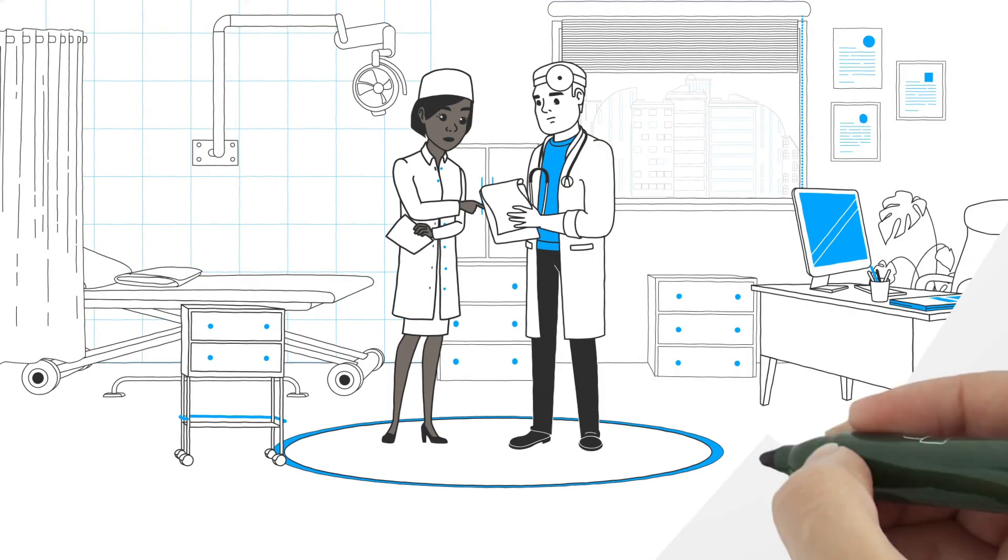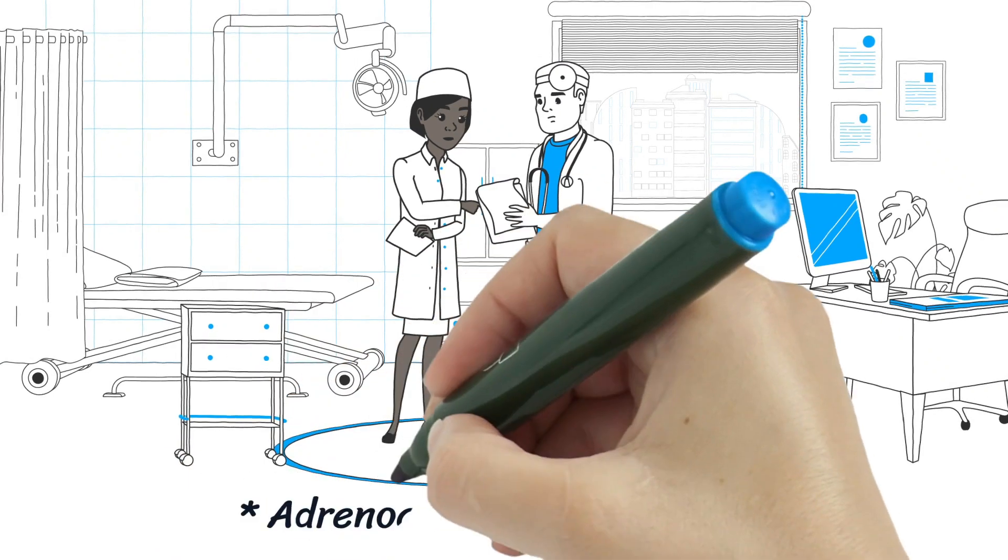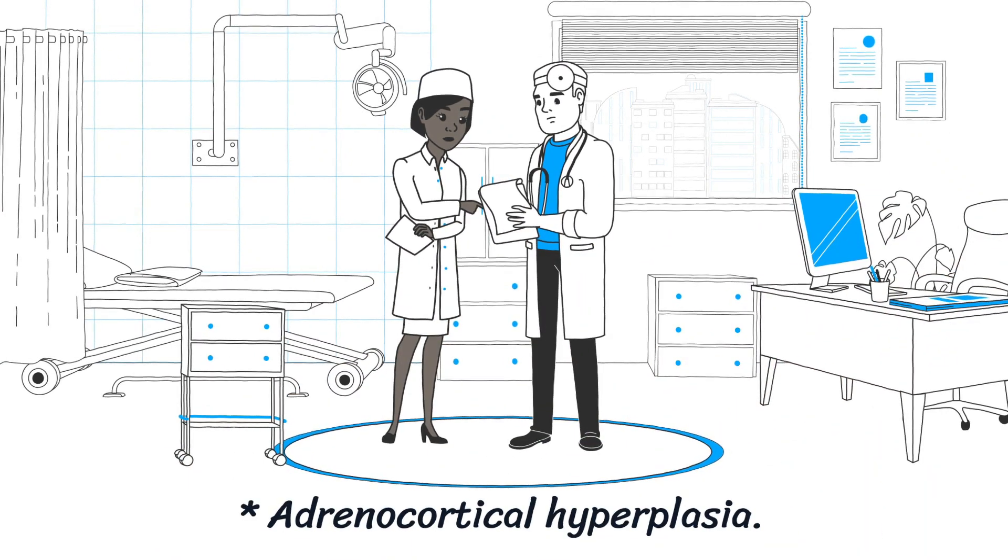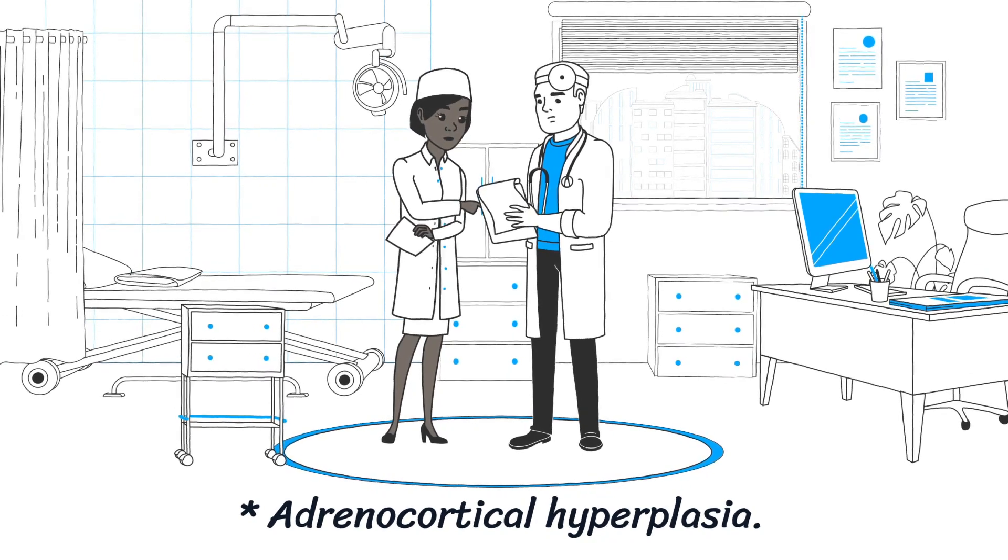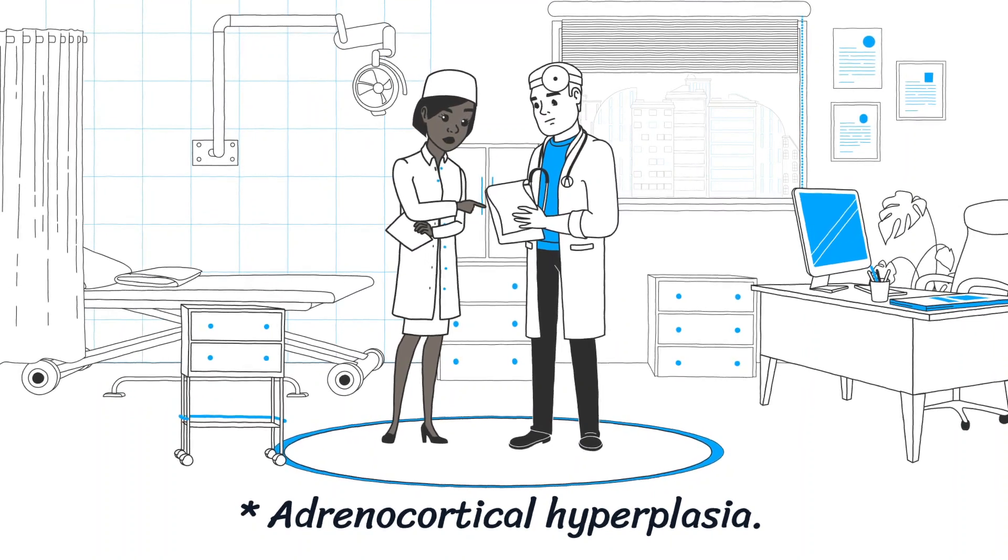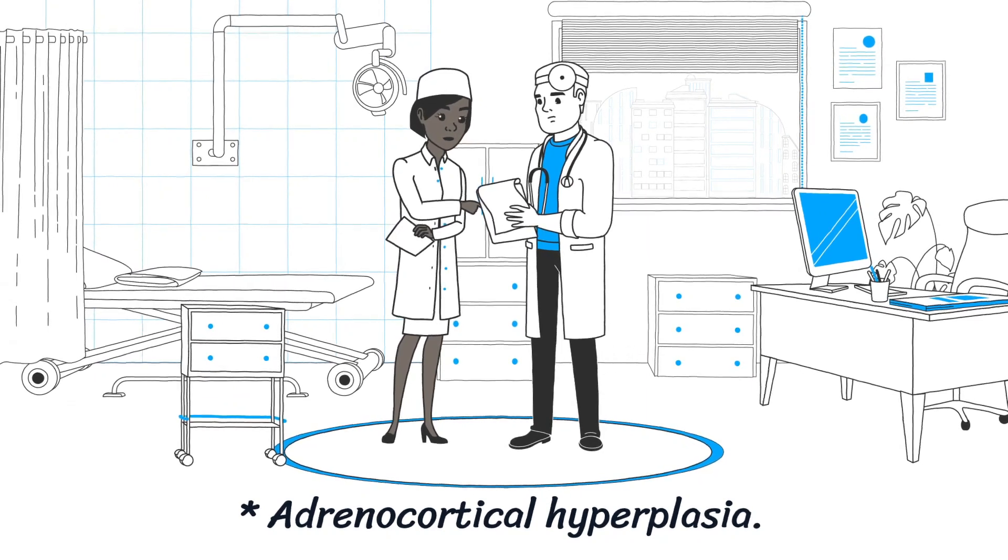Adrenocortical hyperplasia. Amenorrhea precedes characteristic Cushingoid signs such as truncal obesity, moon face, buffalo hump, bruises, hypertension, renal calculi, psychiatric disturbances, acne, and thinning scalp hair typically appear.